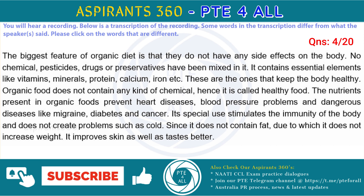The biggest feature of organic diet is that they do not have any side effects on the body. No chemical, pesticides, drugs or preservatives have been used in it. It contains essential elements like vitamins, minerals, protein, calcium, iron, etc. These are the things that keep the body healthy. Organic food does not contain any kind of chemical, hence it is called healthy food.